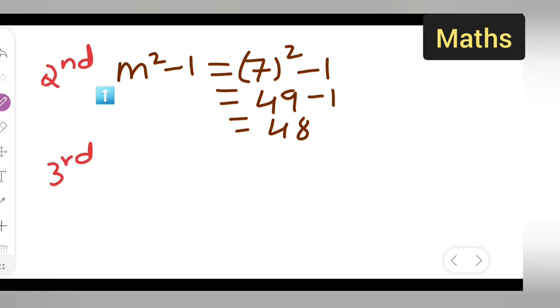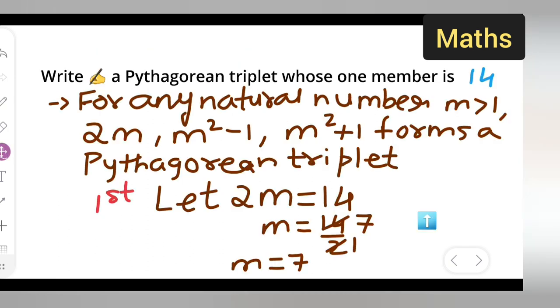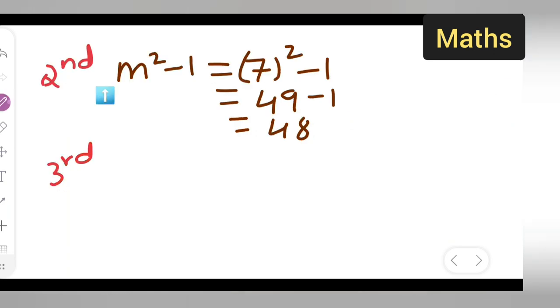For the third part, what you're going to do is m² + 1. M is 7, so 7² + 1. You will get 7² will be 49 plus 1, so your answer will be 50.